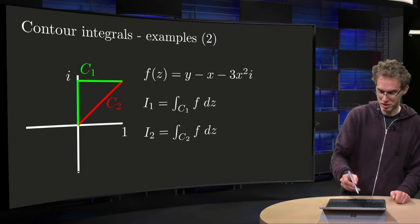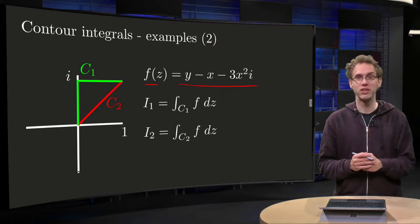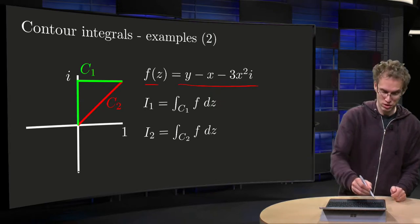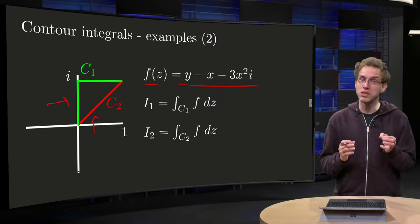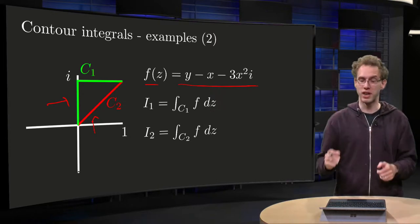So let's take as an example f equals y minus x minus 3x squared times i, and we will integrate this function along C1 and along C2. I notice that the start points are the same, 0, and the endpoints 1 plus i are the same.